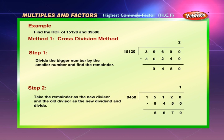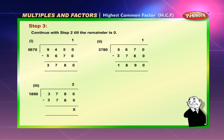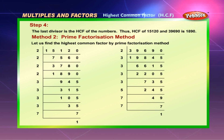Example: find the HCF of 15,120 and 39,690. Method 1 — Cross division method: Step 1, divide the bigger number by the smaller and find the remainder. Step 2, take the remainder as the new divisor and the old divisor as the new dividend and divide. Step 3, continue until the remainder is 0. Step 4, the last divisor is the HCF. Thus the HCF of 15,120 and 39,690 is 1,890.